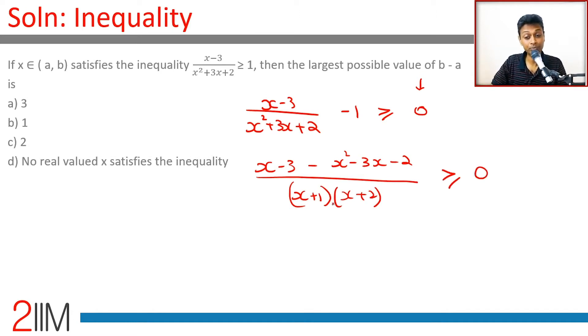So x - 3 minus x² minus 3x plus x is -2x - 5, all divided by (x + 1)(x + 2) ≥ 0. That's -x² - 2x - 5 over (x + 1)(x + 2) ≥ 0.